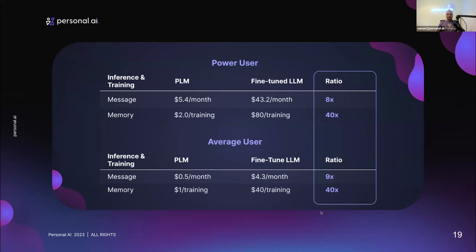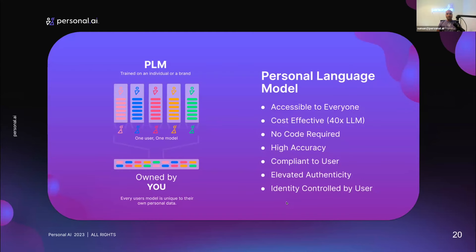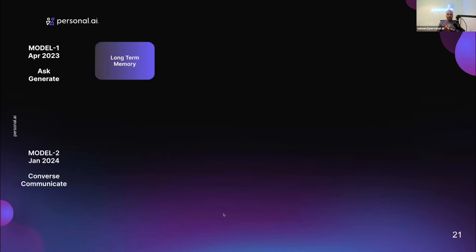This presentation will be made available so you can refer back to the numbers later. To summarize on a personal language model: our core thesis is it's accessible to everybody. Everybody gets to train and control their own model. Memory determines the use case and output of that model. There is heavy emphasis on accuracy — these models are really good at not hallucinating. We developed a no-code platform so you can train your own AI. And finally, elevated authenticity — identity and ownership.